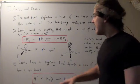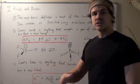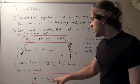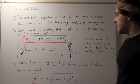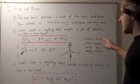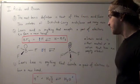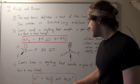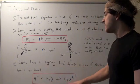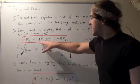A Lewis Base is anything that can donate a pair of electrons to form a new coordinate-covalent bond. Let's look at one of the most basic reactions: an H-plus ion plus a water molecule gives a hydronium ion. The H-plus is a cation with an empty orbital, so it must be a Lewis Acid. Water has a lone pair of electrons, meaning it can donate a pair of electrons, so water must be the Lewis Base. These interact to form the hydronium ion.